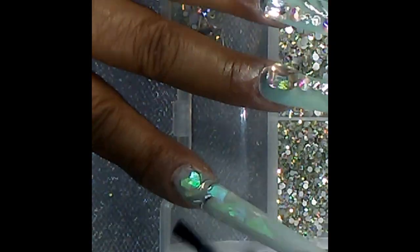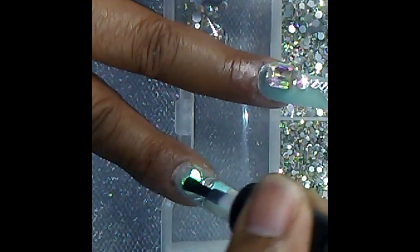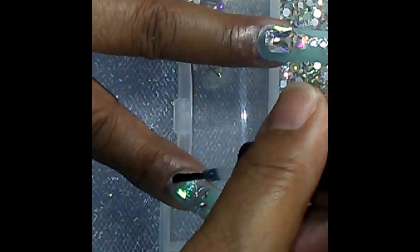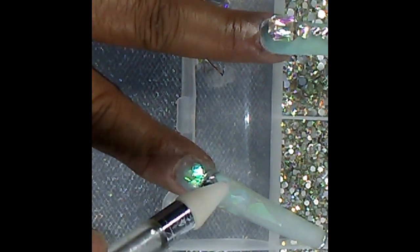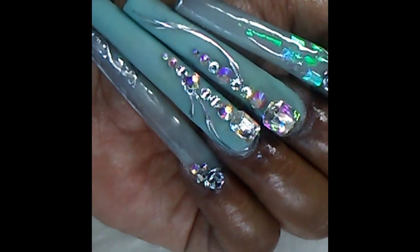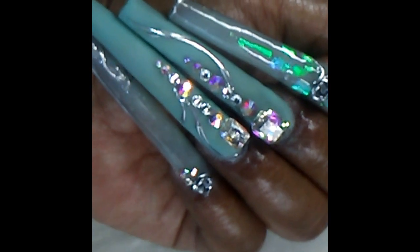Then glossy top coat for the frosted nails. The index and pinky. Which each also got one of the chrome roses. And I am crazy over how these turned out. Hit the like button if you like them too.